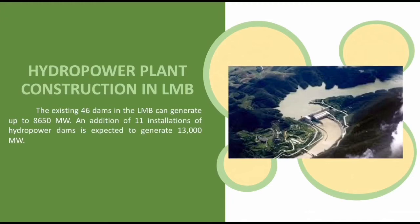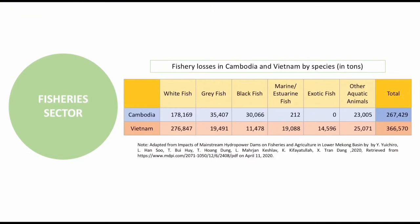Let's take a look at the most affected sectors by these hydropower plants. First is the fisheries sector in Cambodia and Vietnam. Fisheries are the primary source of income and food for people residing around the river. In fact, the Mekong River is considered the world's biggest inland fishery, accounting for a quarter of the global freshwater catch. However, these dam constructions threaten the sustainability of the fishery sector as dams act as physical barriers to fish migrations. As shown in the table, a total of 267,429 tons of fish are being lost in Cambodia, while in Vietnam, a total of 366,570 tons of fish were lost.